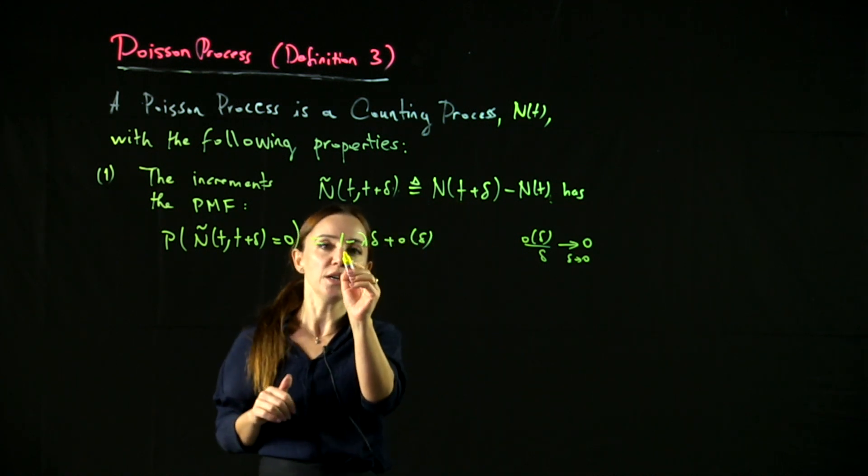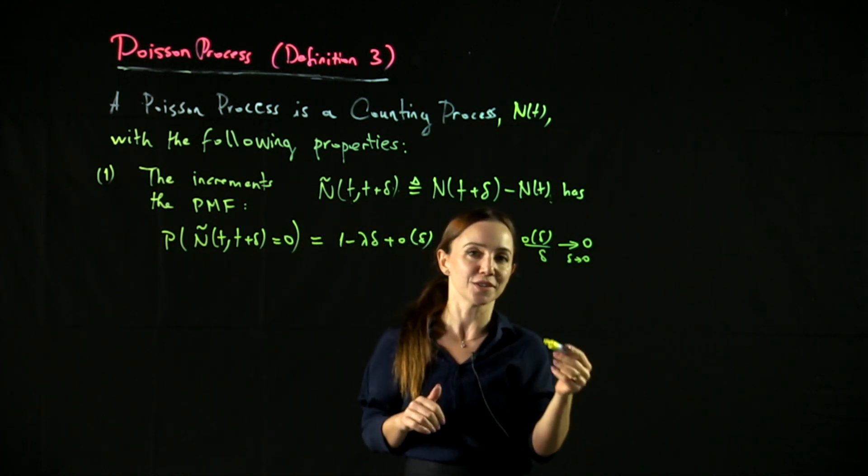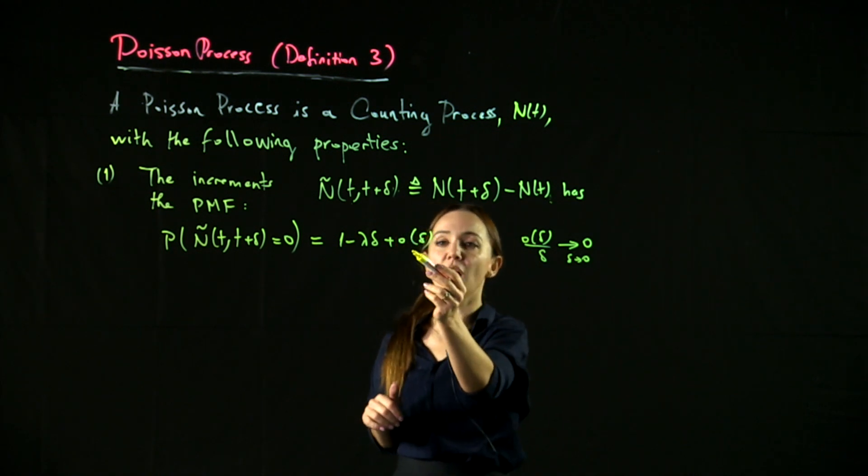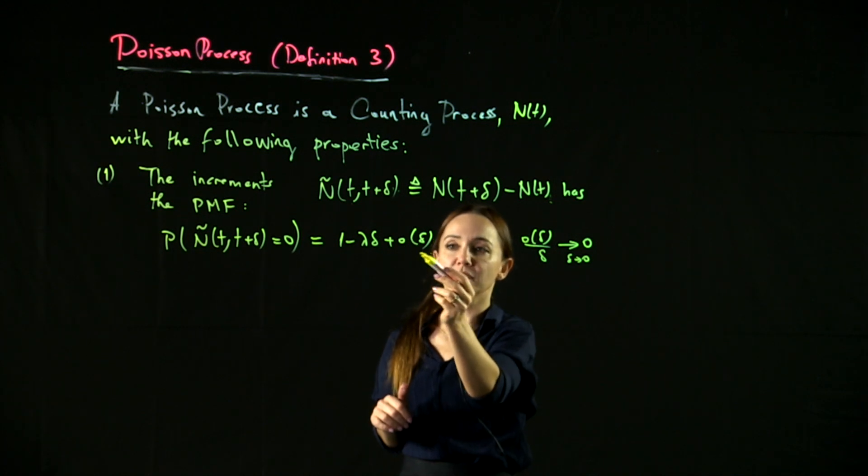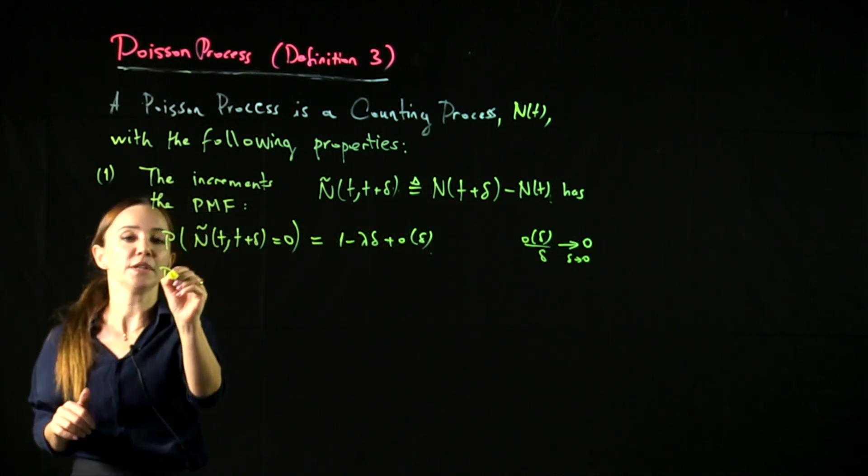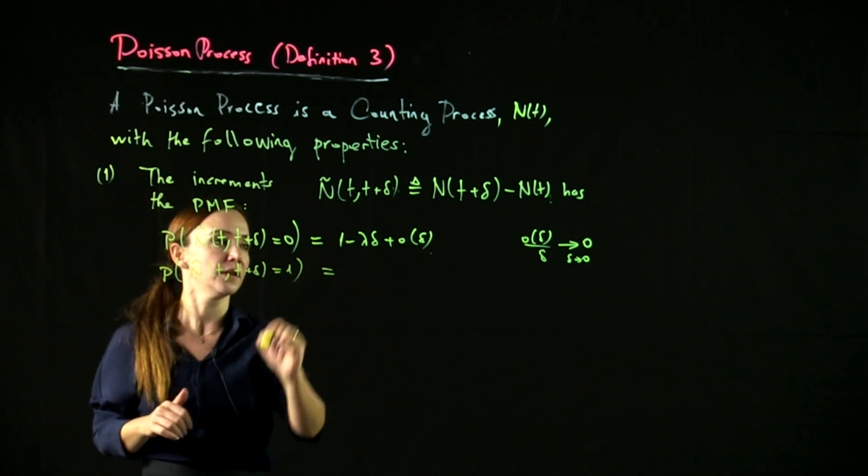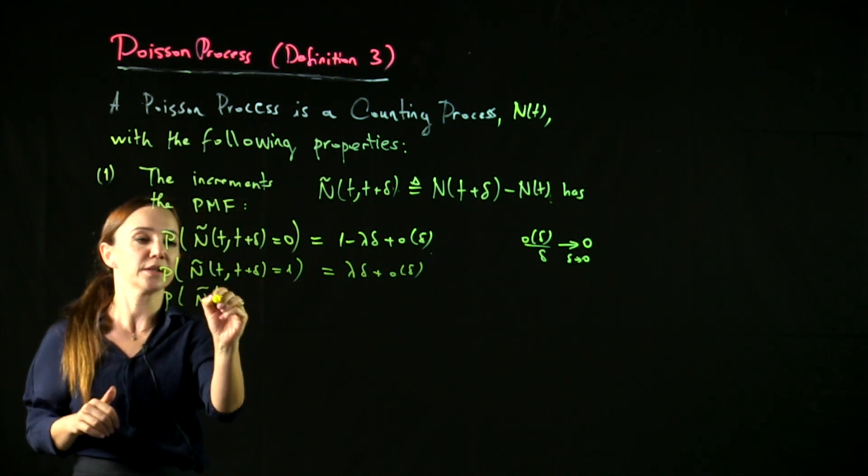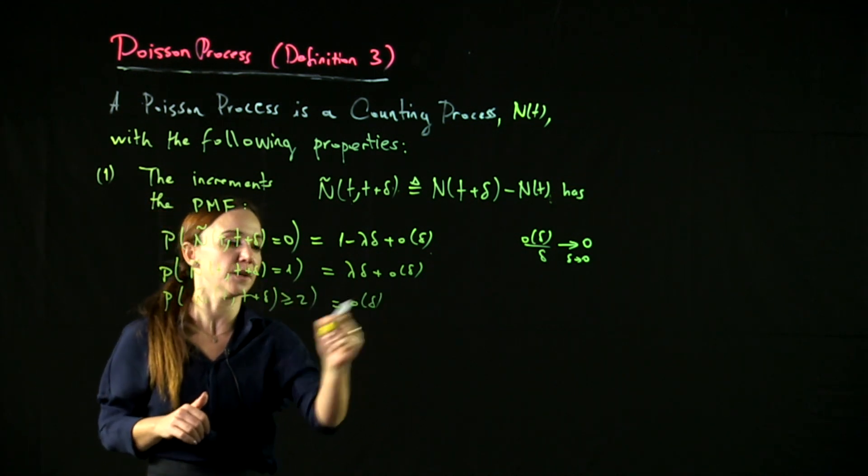So if a sequence goes like delta squared, it goes down to zero faster than delta. So this is typically a higher order term or higher order terms of delta, like delta squared, delta cubed, et cetera. And the probability that this increment is 1 is lambda delta plus little o delta. The probability that the increment is bigger than or equal to 2 is little o delta.